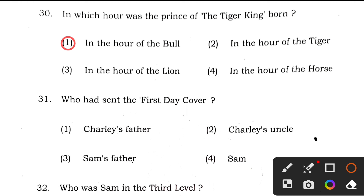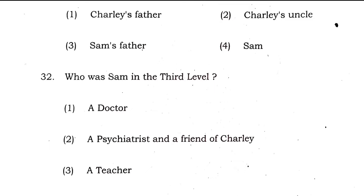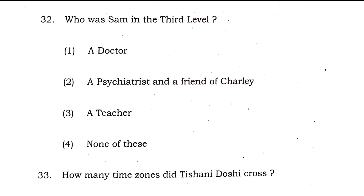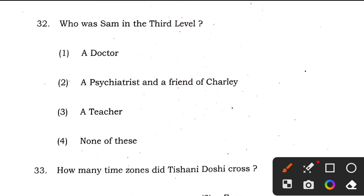Question 31: who had sent the first day cover to Charlie? The right answer is option 4 — Sam, who was both his friend and psychiatrist. Question 32: who was Sam in 'The Third Level'? The right answer is option 2, a psychiatrist and a friend of Charlie.